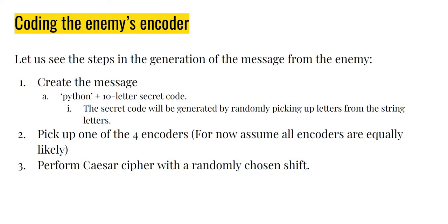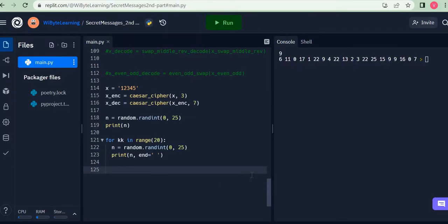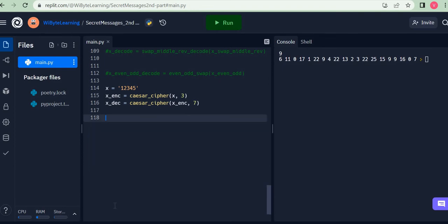The steps in the generation of the message from the enemy: first, create the message itself, which is 'python' plus a 10-letter secret code. The secret code itself will be generated randomly by picking letters from the string 'letters'. Then pick one of the four encoders — for now we'll assume all encoders are equally likely — and perform a caesar cipher with a randomly chosen shift.